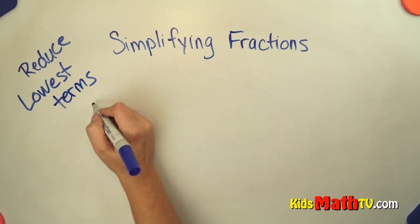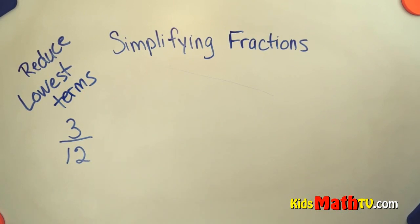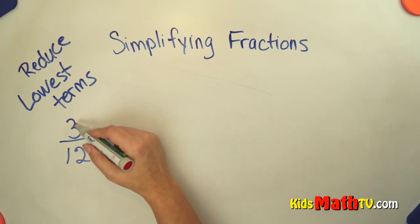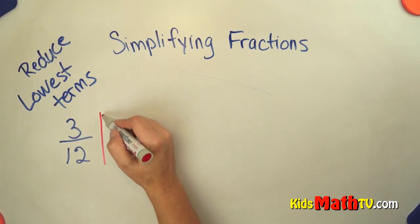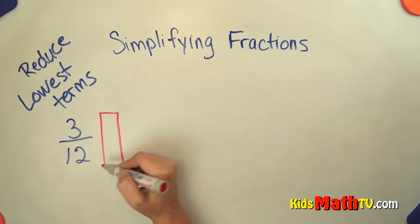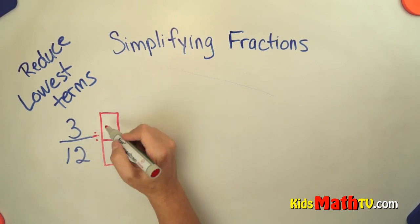So if we have a fraction such as 3 twelfths, 3 twelfths is not in simplest form. It can be simplified more. So what we need to do is we need to find a number that will divide both 3 and 12. And we're going to actually divide by 1, a numerator and a denominator of the same numerator and denominator. So 1 number will divide both 3 and 12. Well 3 does.